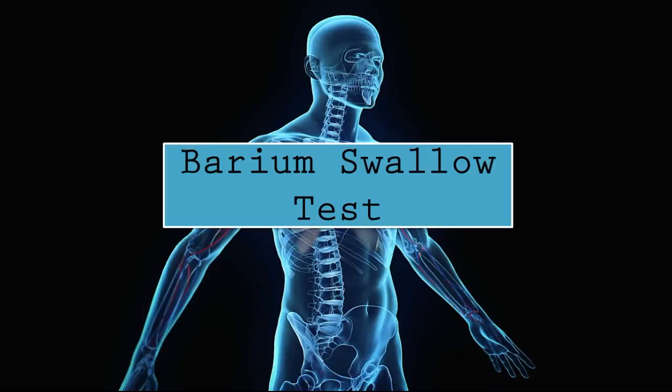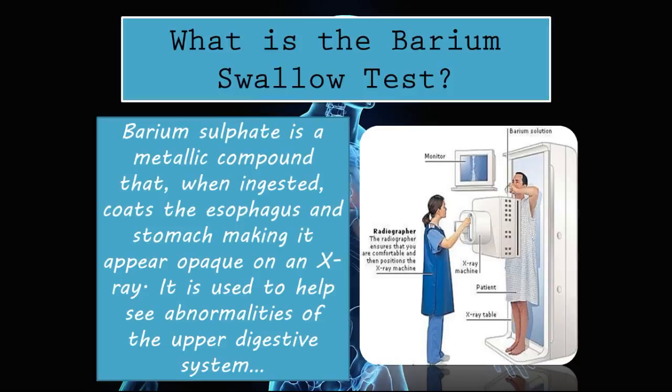Hey guys and welcome to How to Gastro. In today's presentation we will be talking about the barium swallow test — this is just a quick overview of the barium swallow test pertaining to all the esophageal pathologies. So first of all, what is the barium swallow test? Barium sulfate is a metallic compound that when ingested coats the esophagus and stomach, making it appear opaque on an x-ray. It is used to help us see abnormalities of the upper digestive system.